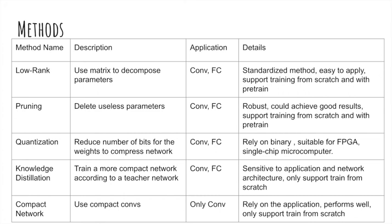The last method is compact network design, which we have talked about previously. For example, ShuffleNet, SqueezeNet, and the Xception module. We design a lightweight model directly instead of trying to make a deep model smaller. It depends on the application and it only supports training from scratch.